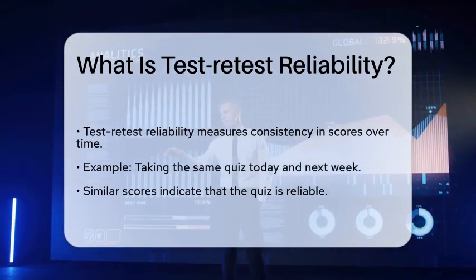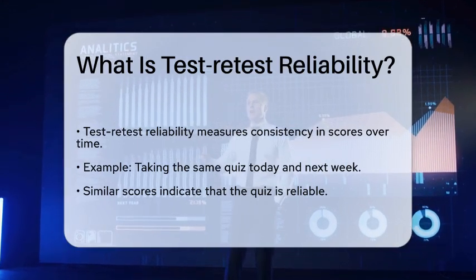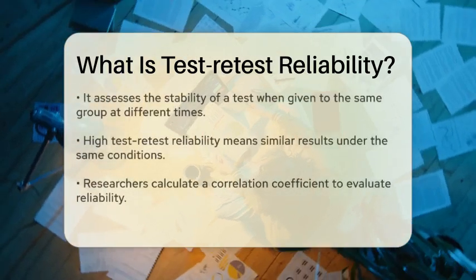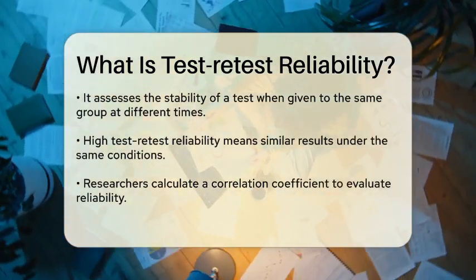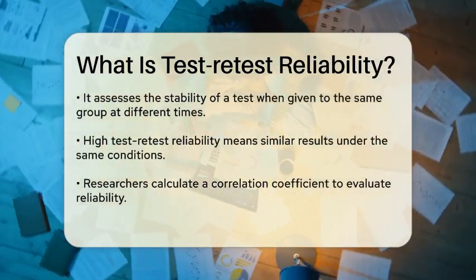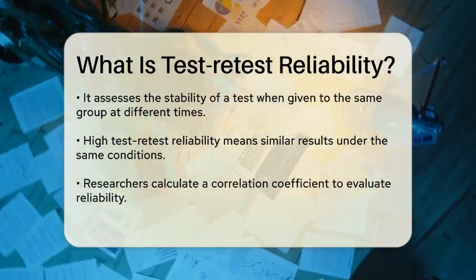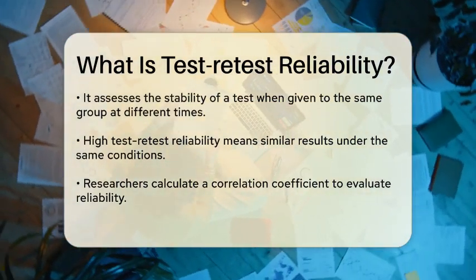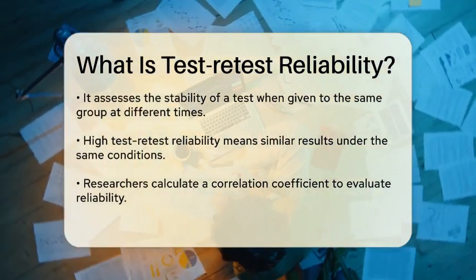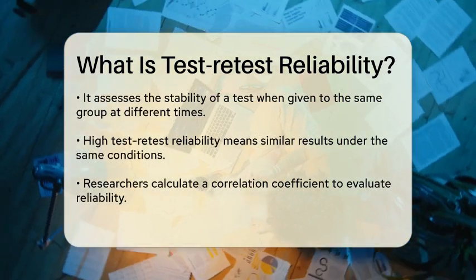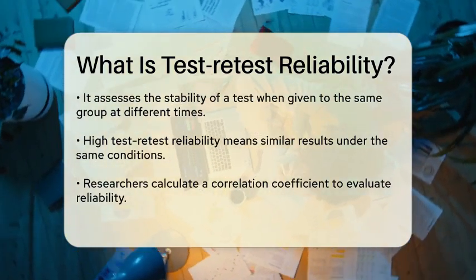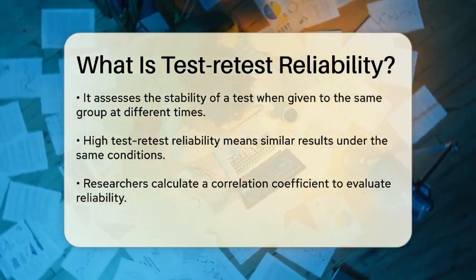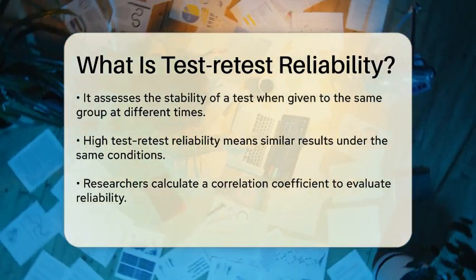Test-retest reliability refers to the consistency of a measure when it is administered to the same group of individuals at two different points in time. It is a way to assess the stability of a test over time. If a test yields similar results under the same conditions, it demonstrates high test-retest reliability.